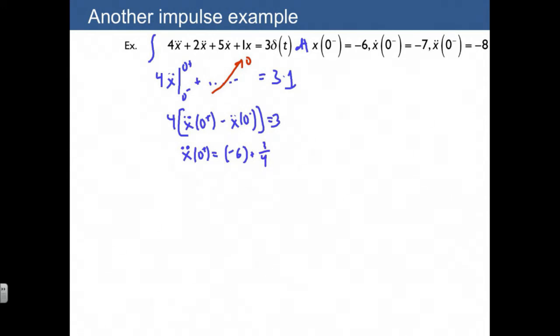So we end up with -5.25. We have a new set of initial conditions. There's no change in the other initial conditions. So x dot of 0 plus is just going to remain -7, and x of 0 plus is going to remain -8. The interesting part was this part, the (n-1)th derivative changed.